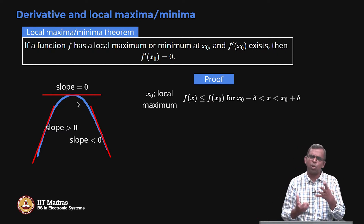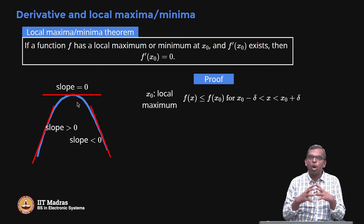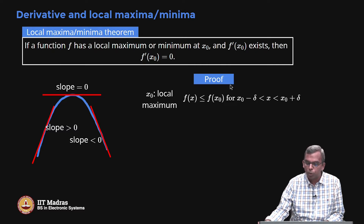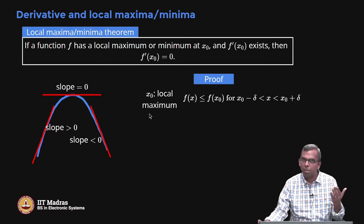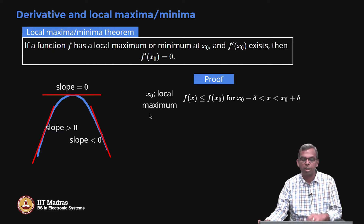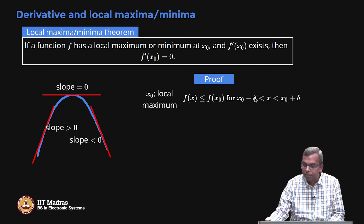Here is a proof. From this module onwards we will start seeing some proofs. I will assume x₀ is a local maximum — I will leave the local minimum case as an exercise. If x₀ is a local maximum, there exists a positive delta such that for x between x₀ − δ and x₀ + δ, f(x) is always less than or equal to f(x₀).